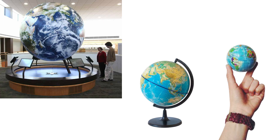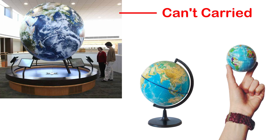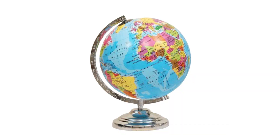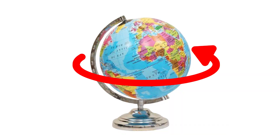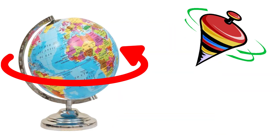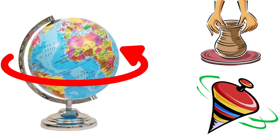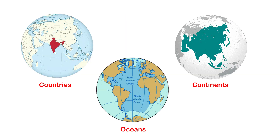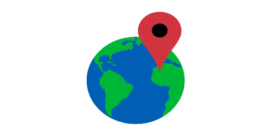Globes may be of varying size and type — big ones which cannot be carried easily, small pocket globes, and globe-like balloons which can be inflated and are handy and carried with ease. The globe is not fixed; it can be rotated the same way as a top spin or a potter's wheel is rotated. On the globe, countries, continents and oceans are shown in their correct size.